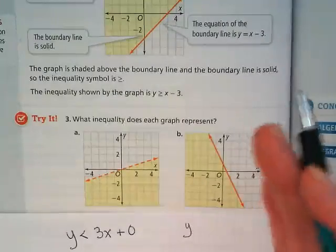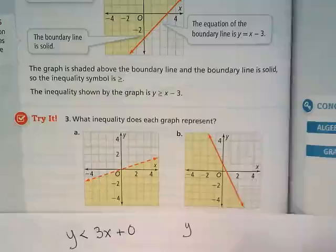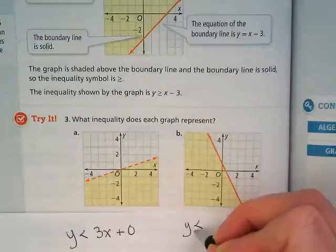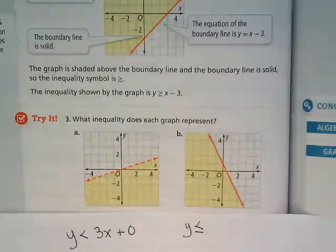Less than because it's shaded to the left, which would be below, right? So it's less than or equal to because it's a solid line. It's a negative slope.